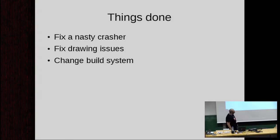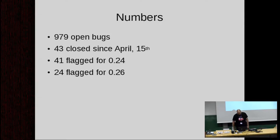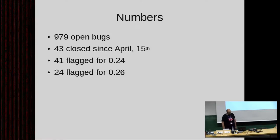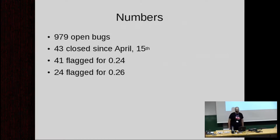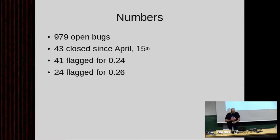What I've done so far: I fixed a nasty crasher, I fixed some drawing issues, and I changed the build system. That's not really much, you might say, but if you look at the numbers — we currently have 979 open bugs. I already closed 43. Roughly a third of those were closed by changing the build system, because it gave us for free: the new Yelp integration, AppStream integration, translation, desktop translation, and the gettext stuff.